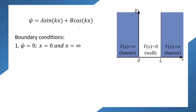Our first boundary condition is that ψ = 0 at x = 0 and at x = L (and at infinity). Beyond x = 0, we have an infinite potential barrier, so there is no possibility for the particle to jump into that region. Therefore, there is no possibility of finding the particle there, and the wave function of the particle inside this box will come to zero at x = 0. That is, ψ = 0 at x = 0.